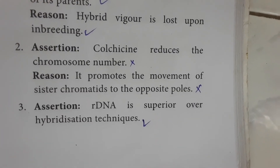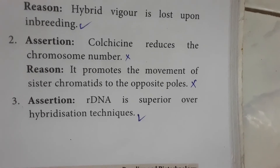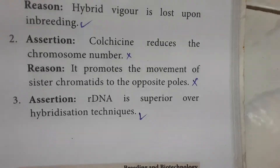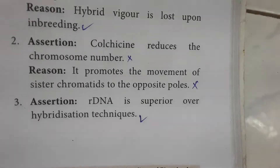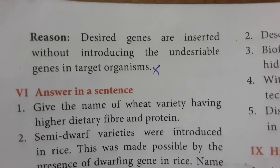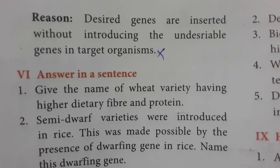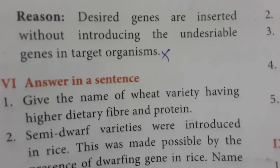Assertion — colchicine reduces the chromosome number. This is a wrong statement; colchicine actually doubles chromosomes. Reason — colchicine promotes the movement of sister chromatids to opposite poles. This is also a wrong statement. Assertion — recombinant DNA is superior over hybridization techniques because desired genes are inserted without introducing undesirable genes into the target. This reason is correct.